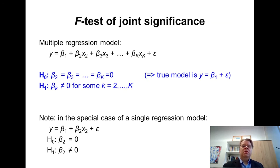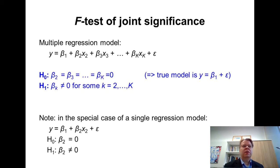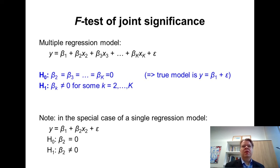What is the hypothesis we are testing? For the F-test of joint significance, the null hypothesis is always stated as all beta coefficients except for the constant beta 1 are equal to zero — so beta 2, beta 3, all the way to beta k are all equal to zero. This implies the true model is just a constant plus error term epsilon, meaning none of the explanatory variables have any impact on y. The alternative hypothesis states that at least some of the regressors have an impact on the dependent variable.